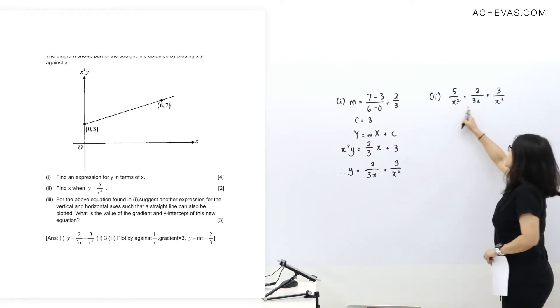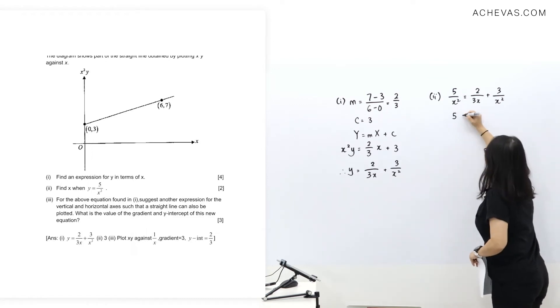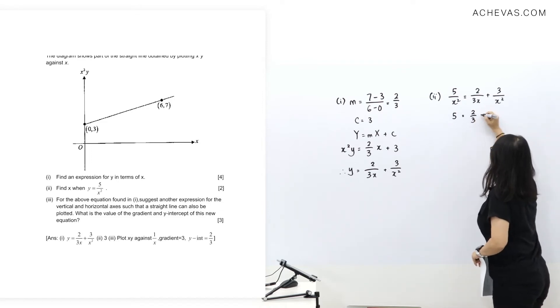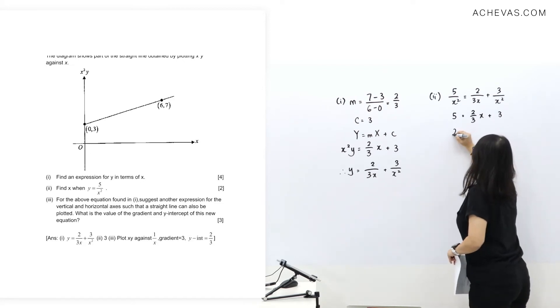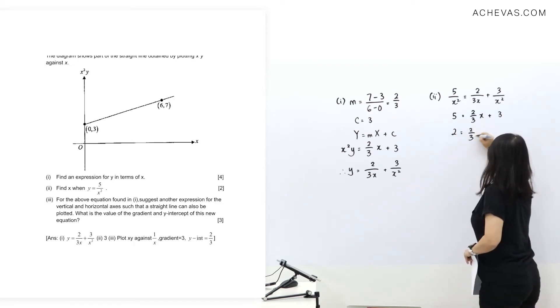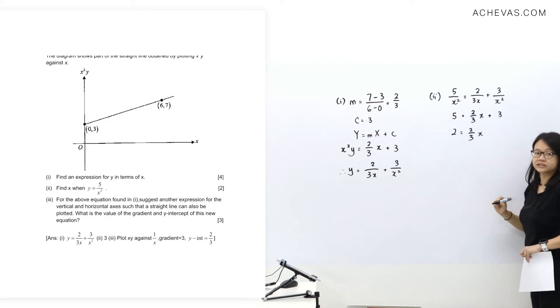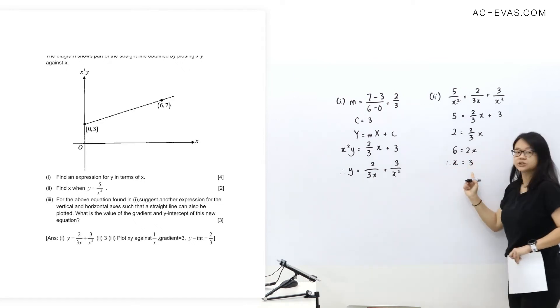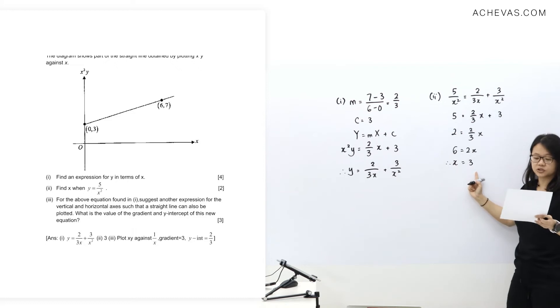So multiplying x squared to each of these terms. I'm going to multiply x squared here. So we have 2 over 3x plus 3. Solving for x value, we have x equals 3. That's for part number 2.